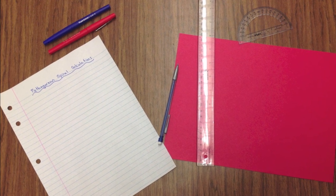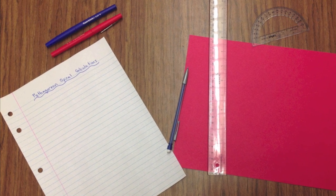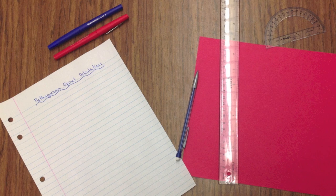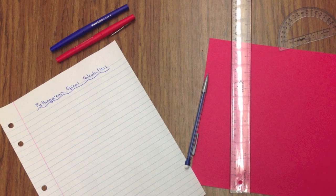For today's lesson you need some standard construction paper, a pencil, a protractor, and a ruler, and then I also have a piece of lined paper because we're going to do some calculations along with creating our spiral.